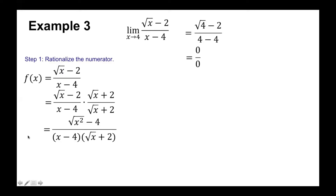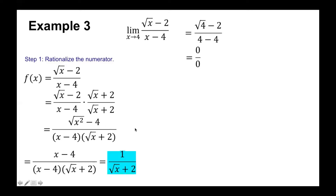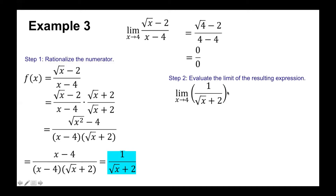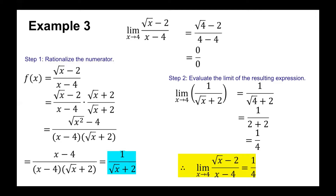Simplifying the numerator: √(x² - 4) = x - 4. The common factor (x - 4) cancels, leaving 1 / (√x + 2). For step 2, we evaluate the limit of 1/(√x + 2) as x approaches 4. By direct substitution: 1 / (√4 + 2) = 1 / (2 + 2) = 1/4. Therefore, the limit of (√x - 2)/(x - 4) as x approaches 4 is equal to 1/4.